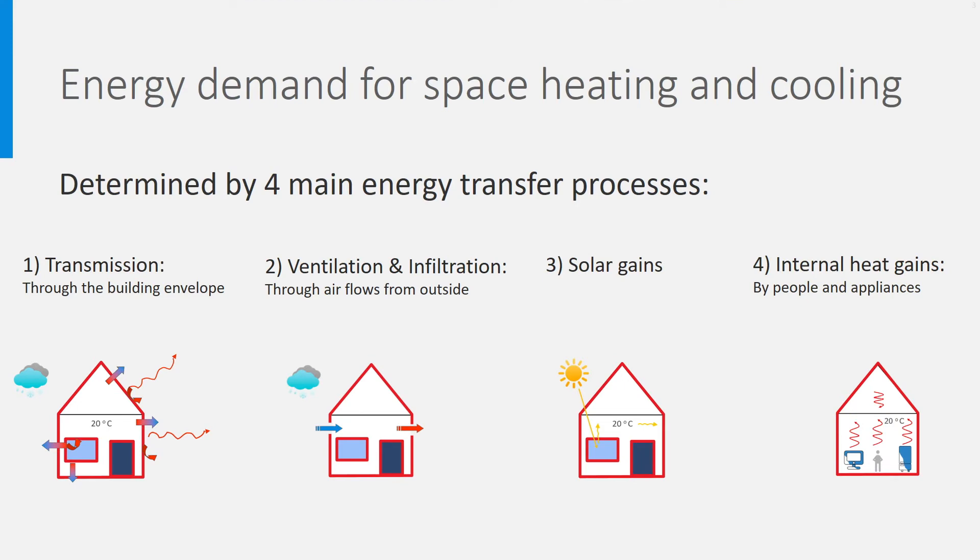In the first lecture you learned about the principle of making an energy balance to estimate the energy demand for heating and cooling. Let's look now at how to calculate the different parts of this energy balance which are transmission through the envelope, ventilation and infiltration, solar gains and internal heat gains by people and appliances.